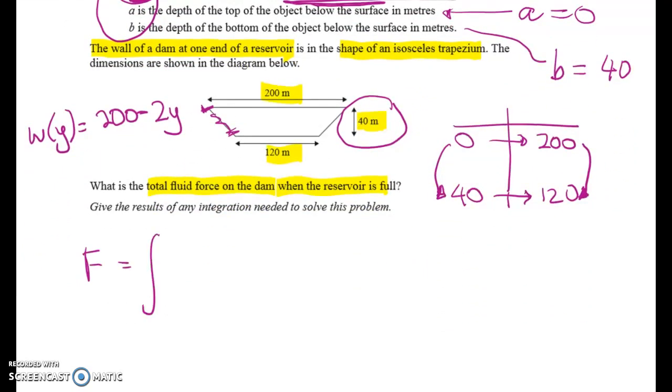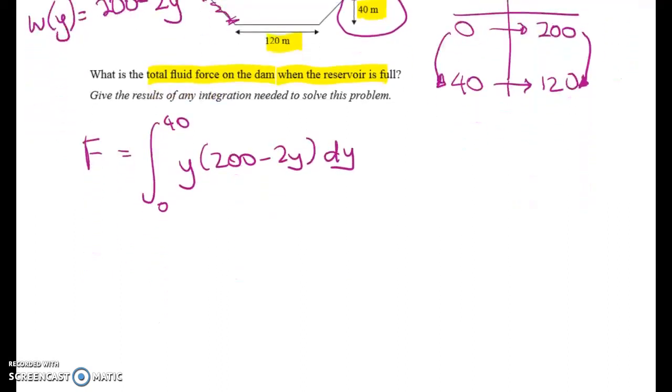So F will go from 40 to 0, and then it's Y times 200 minus 2Y, DY. Probably one of the easiest integration calculations that you have to do in a Level 3 integration paper.